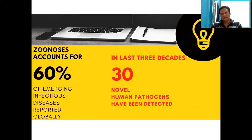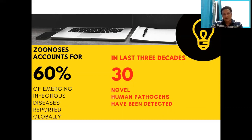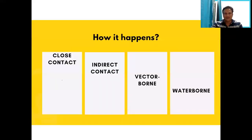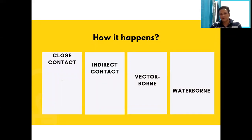Coronavirus and COVID-19 is said to be a novel human pathogen, but in the last three decades there have been 30 human novel pathogens. The WHO says that somewhere around 60 to 72 percent of cases related to epidemics will be of zoonotic nature, meaning they would be spread by animals.